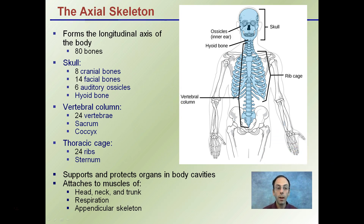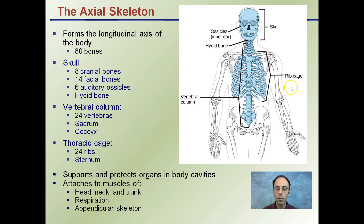Looking more specifically at the axial skeleton and what it's composed of: the skull is made up of many bones, along with the vertebral column — where we'll learn about the different regions — and the thoracic ribcage and how the different ribs differ. The axial skeleton supports and protects organs and body cavities. It attaches to muscles of the head, neck, and trunk, and is important for respiration and attachment of muscles as part of the appendicular skeleton.